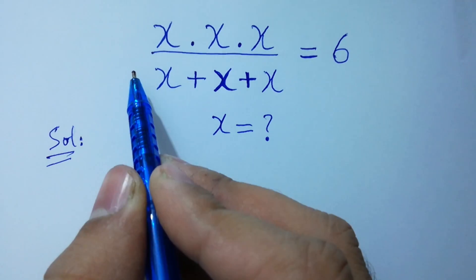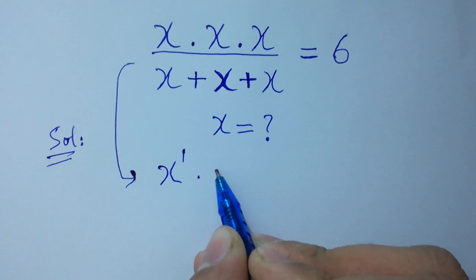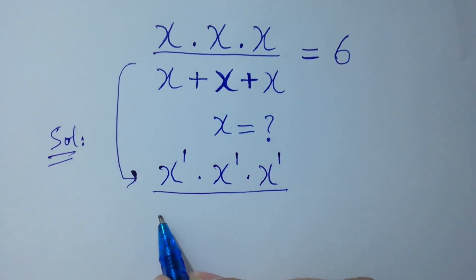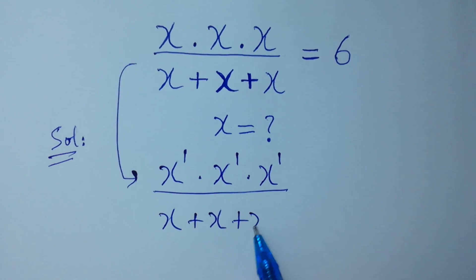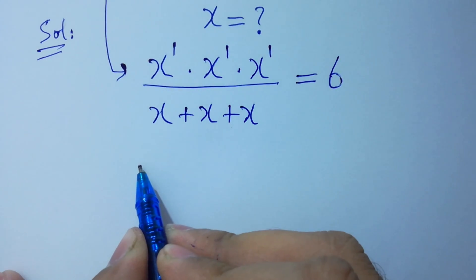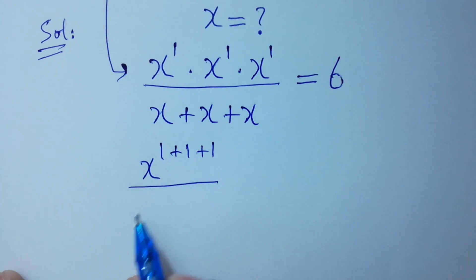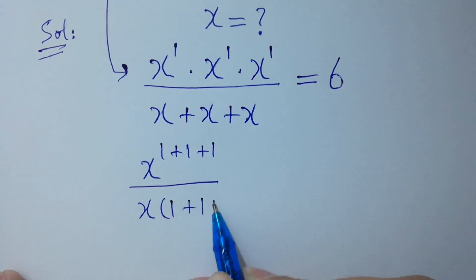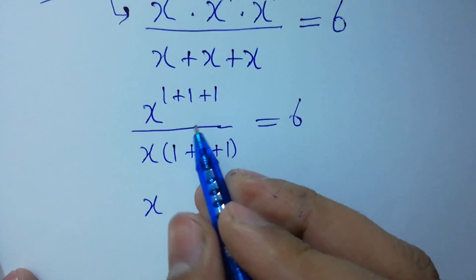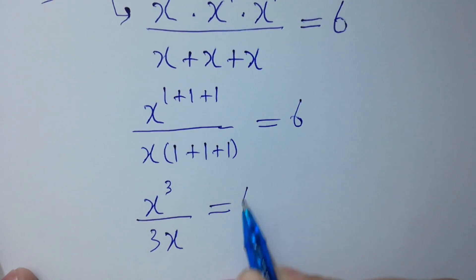In fact, this is x to the power 1 times x to the power 1 times x to the power 1, over x plus x plus x. x plus x equals 6. We have x to the power 1 plus 1 plus 1, over x common, we have 1 plus 1 plus 1 equal to 6. x to the power 3 over 3x equal to 6.